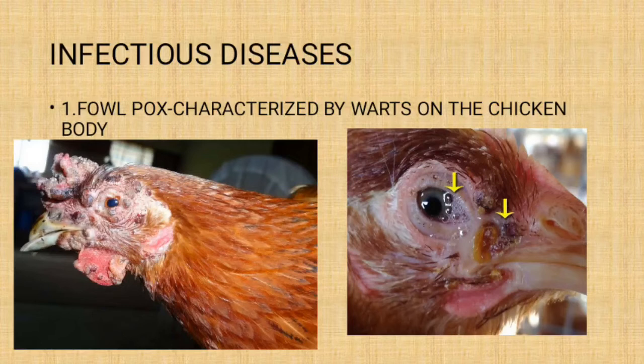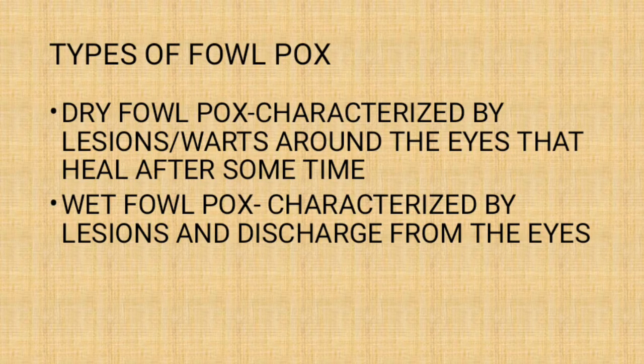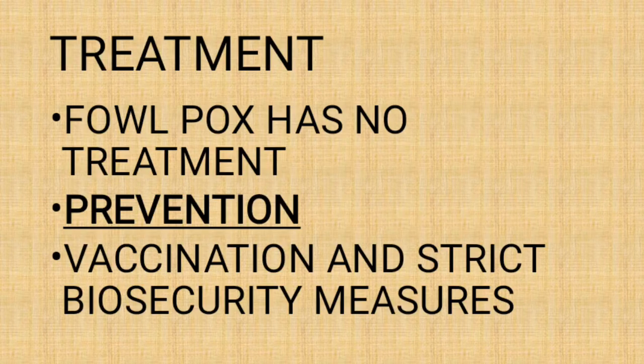The first infectious disease is fowlpox. You can see it in the pictures. The first picture on the left is called dry fowlpox, where you have warts or lesions on the body, most especially around the head, but there is no discharge from the eye. The one on the right, where there is discharge from the eyes and you still see the lesions, is known as wet fowlpox. So we have two types: dry and wet fowlpox.